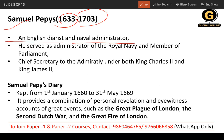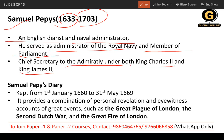He served in the Royal Navy as an administrator and was also a Member of Parliament. He served as Chief Secretary to the Admiralty under both King Charles II and King James II. His diary was kept from 1st January 1660 to 31st May 1669 — approximately nine years of diary entries.